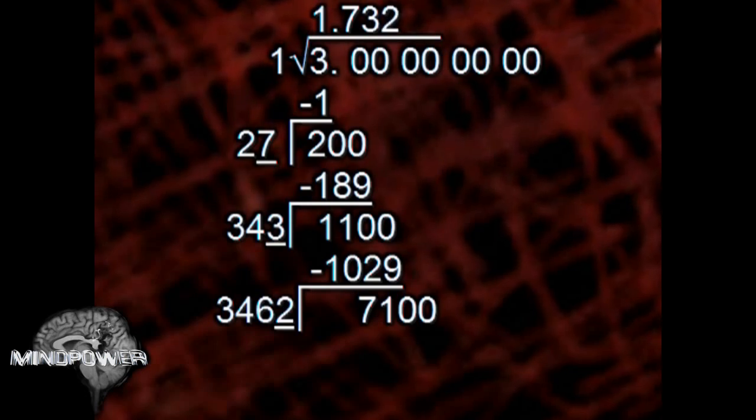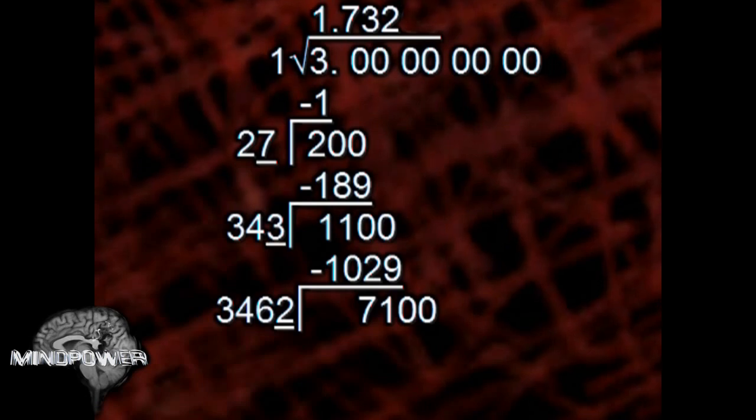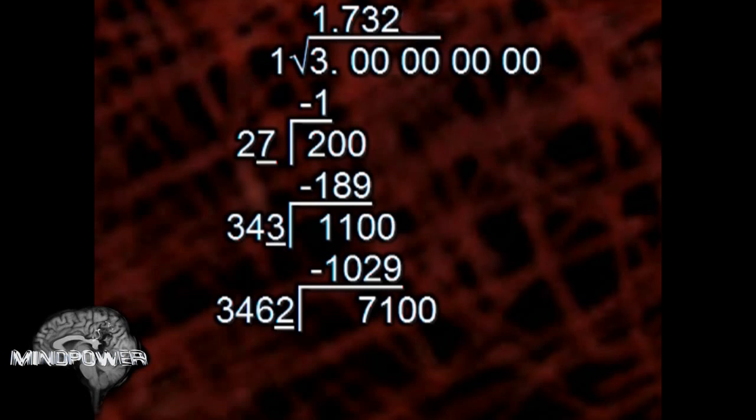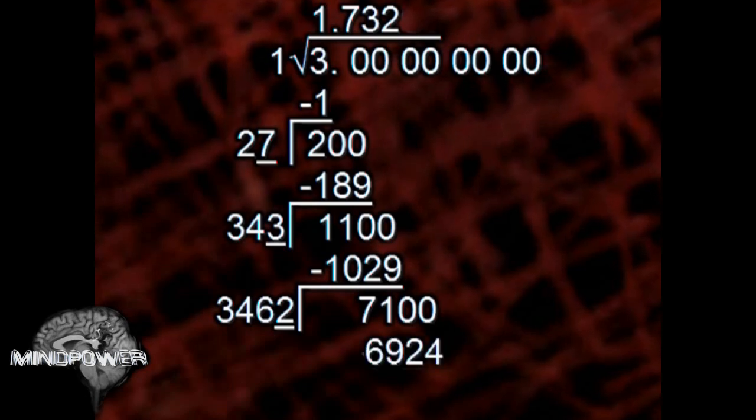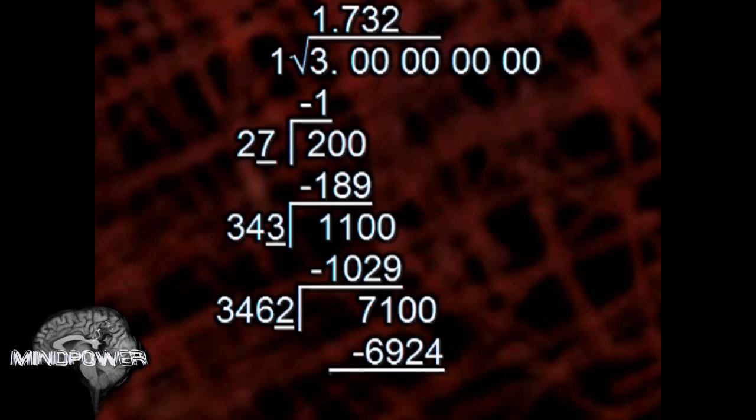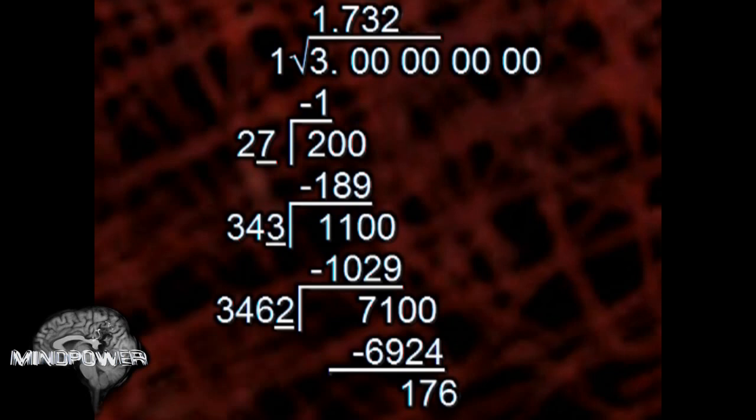3462 is the number we've selected because 2 times 3462 is still smaller than 7,100. 2 times 3462 equals 6924. Once again, we need to subtract that from 7,100, and that equals 176.